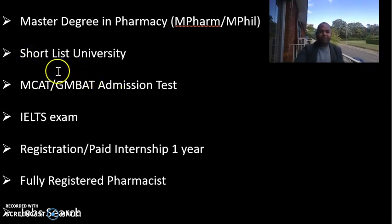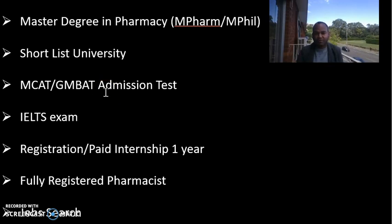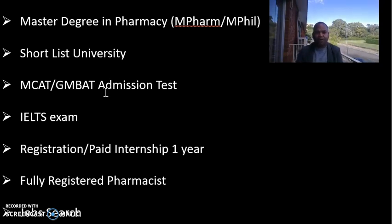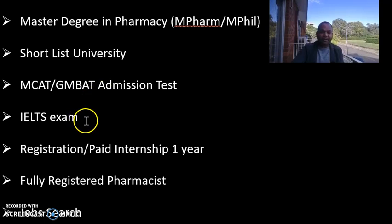There are some tests like MCAT and GAMSAT that some universities ask for, but if you are a registered pharmacist in your country and you are working with two to three years of experience, then there is no need. For English requirements, you have to have a 7 overall or 6.5 in each band. Sometimes they give exemption if you have a bachelor's degree from an institution offering courses in English. For example, if you are from India, Pakistan, or Bangladesh, you can get a letter from your university saying the course was conducted in English — but this exemption is not guaranteed for all universities.